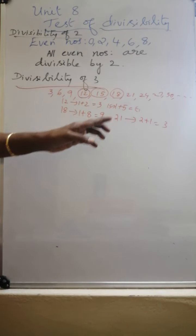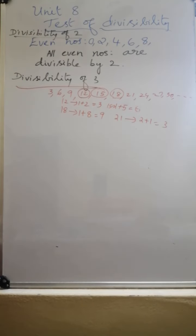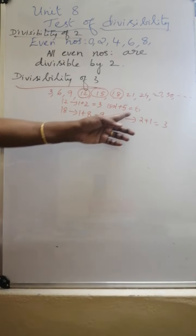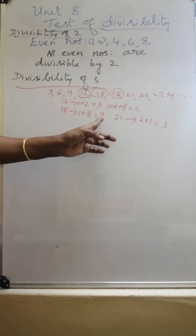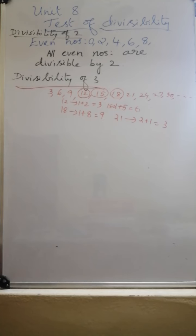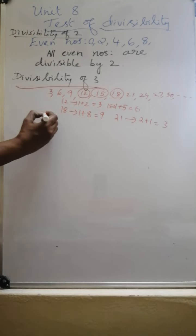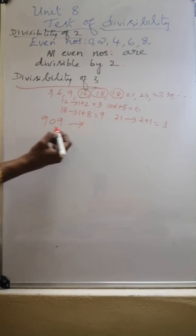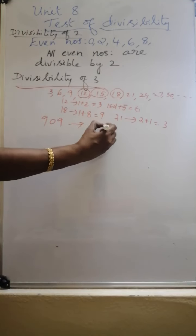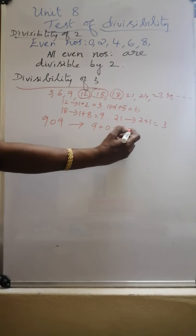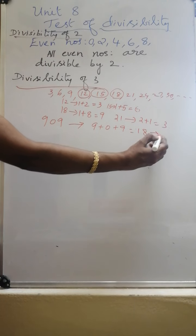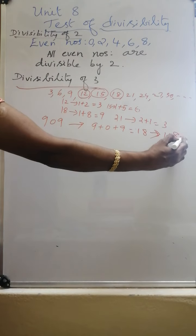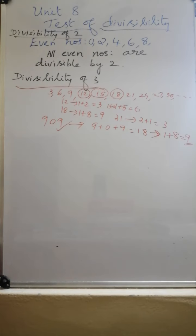The digit sum will be a multiple of 3 — either 3, 6, or 9. How to check whether 909 is divisible by 3 or not? Add the digits: 9 plus 0 plus 9 is 18. Again add: 1 plus 8 is 9. So this number is divisible by 3.